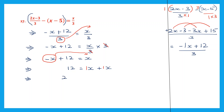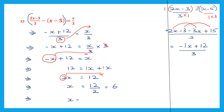So 12 will remain here. X will remain there. The other x becomes plus x. So now x plus x: that is 1x plus 1x is 2x. So 2x is equal to 12. Now we can find the value of x. This will be 12 divided by 2. 2 6s are 12. So we have found the value of x. x is equal to 6.